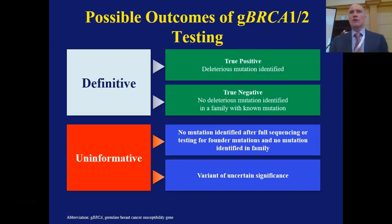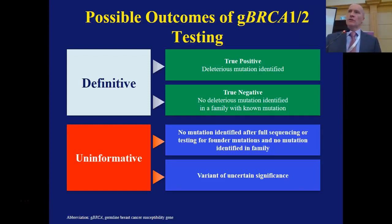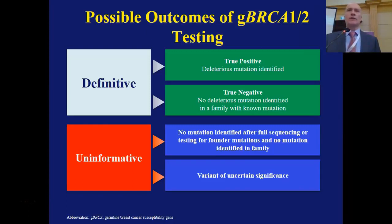When we think about testing, there's really a definitive test and an uninformative test — two levels of evidence. We're getting closer to where more things are definitive. Classically, we need to know the mutation we're looking for. If we know the proband — if we know the mutation in the family — we can very accurately tell whether the person of interest has a particular mutation or not, giving a true positive or true negative. If we're just screening generally, there are so many mutations and variants of undetermined significance that we may not be able to figure this out as well.